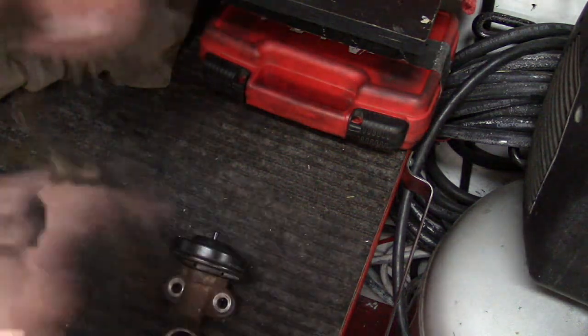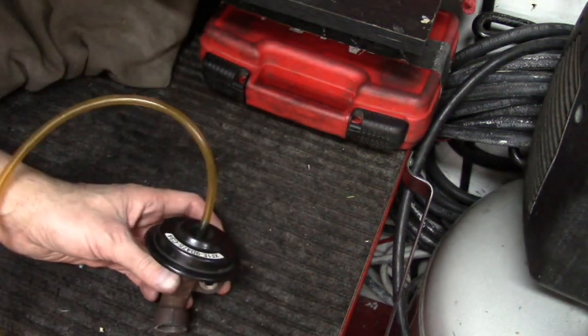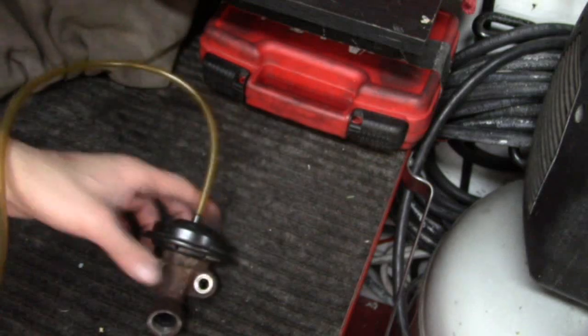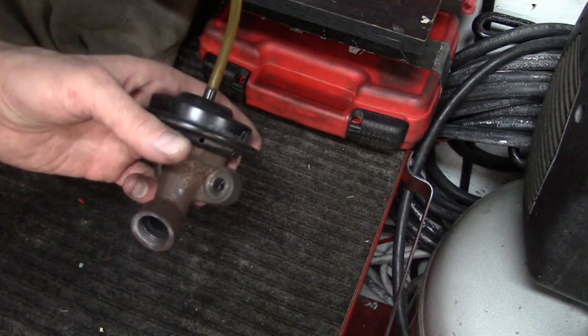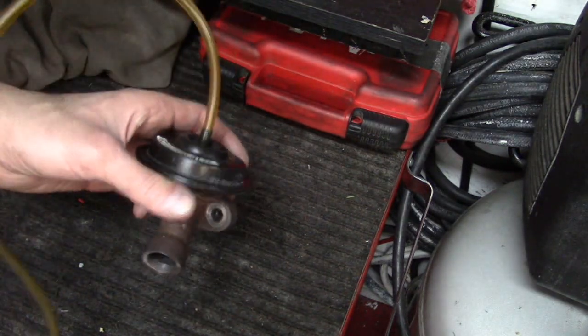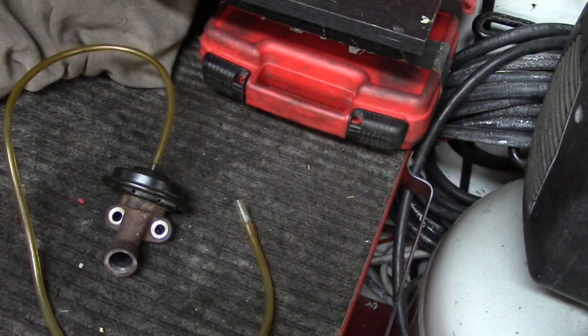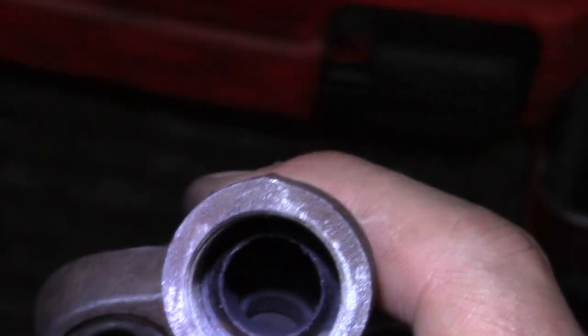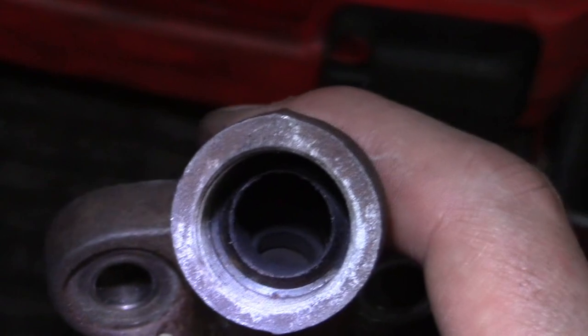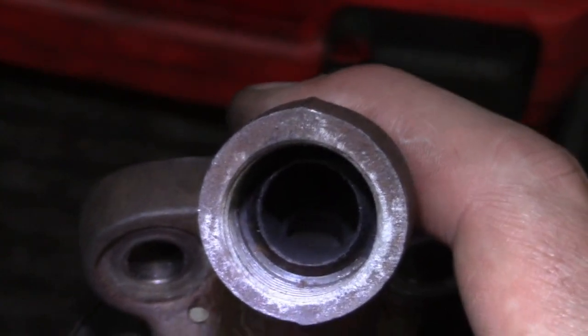I'm going to take a little vacuum line here, put the vacuum line onto the EGR valve, and then I'm actually just going to suck on the other end. Obviously, I'd use a vacuum pump normally, but by sucking on the end here, maybe you can hear it opening and closing. I'm going to get a flashlight, and we're going to actually look at this pintle in here. When I suck on the hose, you can see it opens and closes.